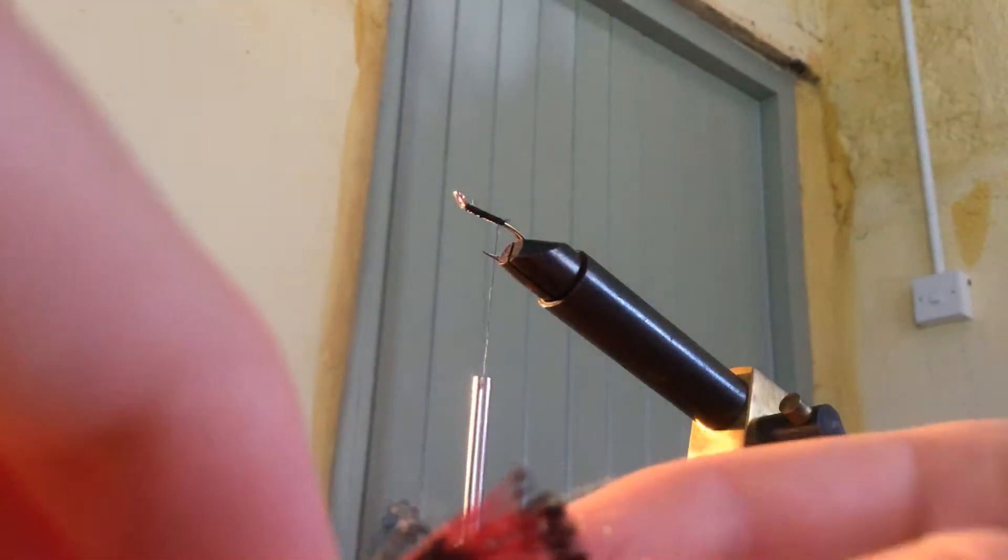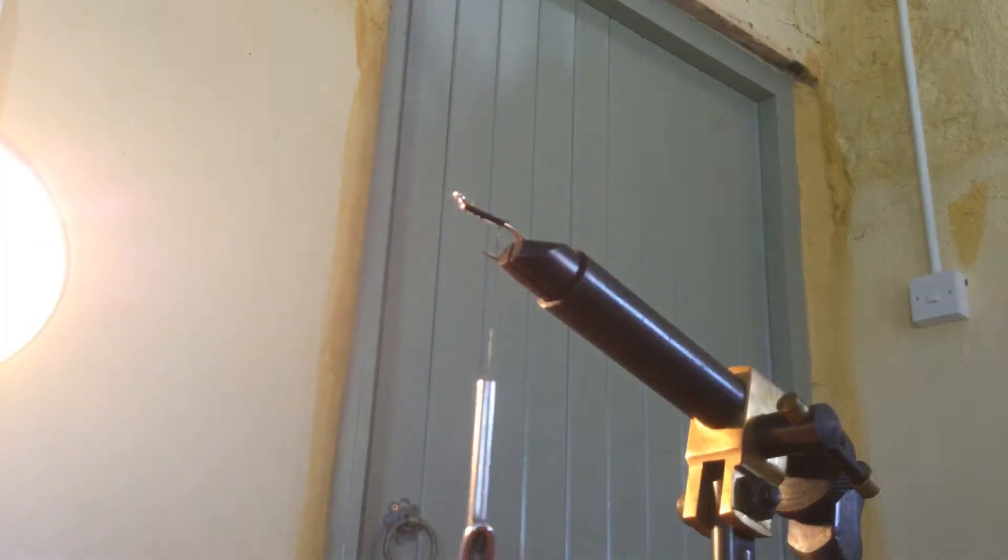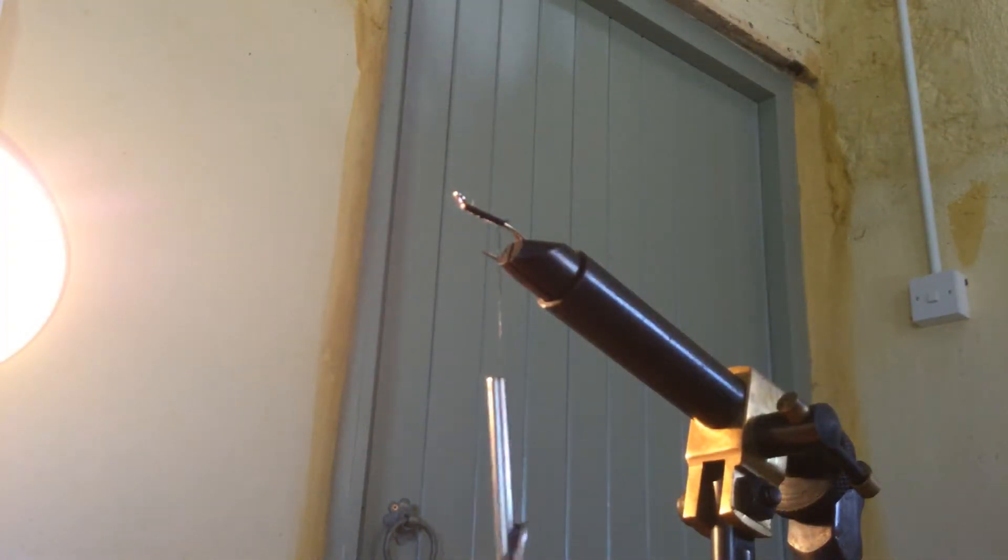This one here has got a black hackle, red pheasant feather, some red bucktail and some crystal flash. It's also got some tinsel underneath it right there. So that's kind of what we're going to try and tie today. We're just going to smash it right there guys, we're going to completely ace it.